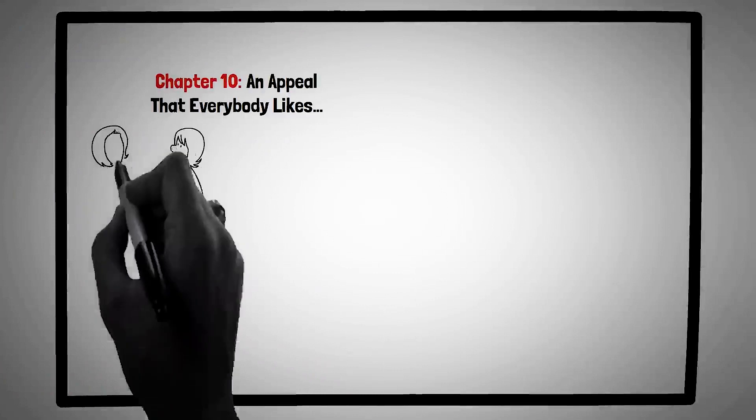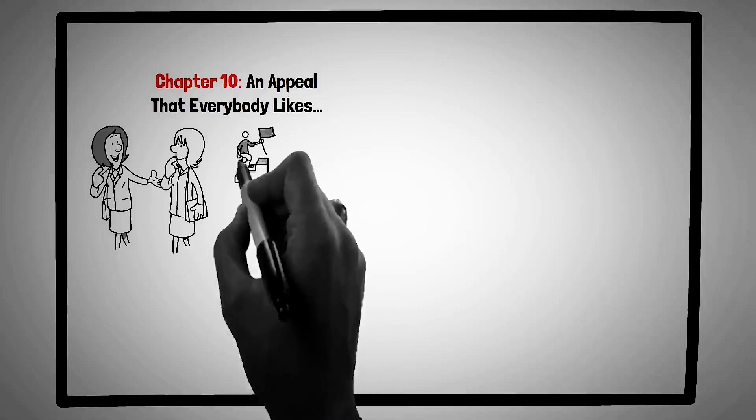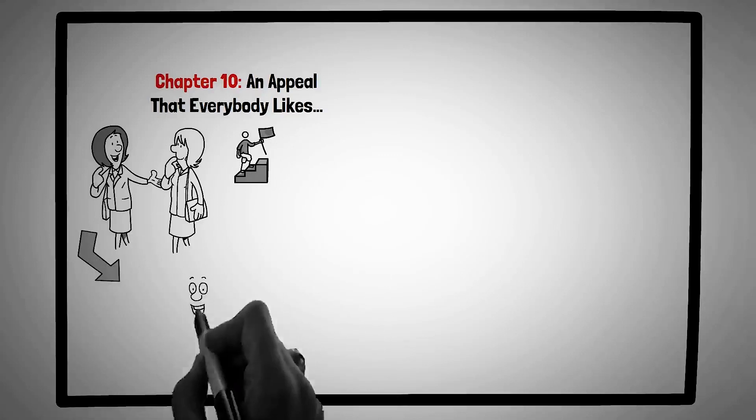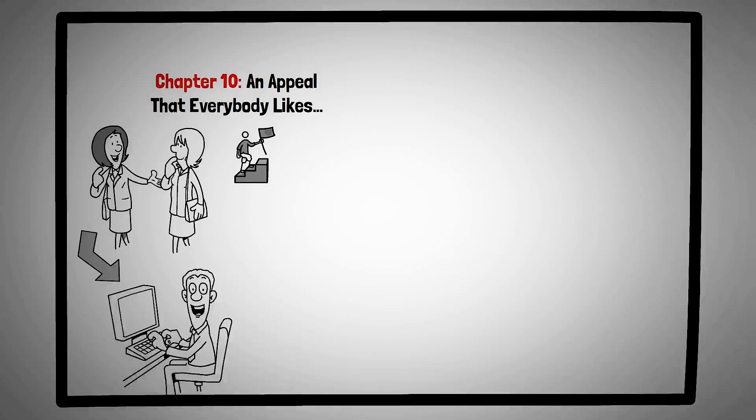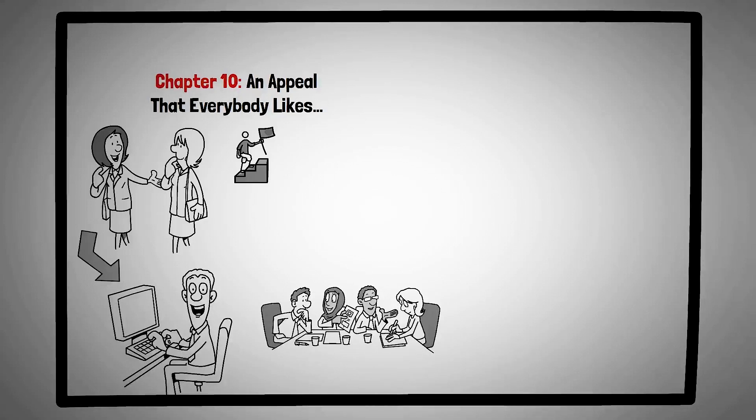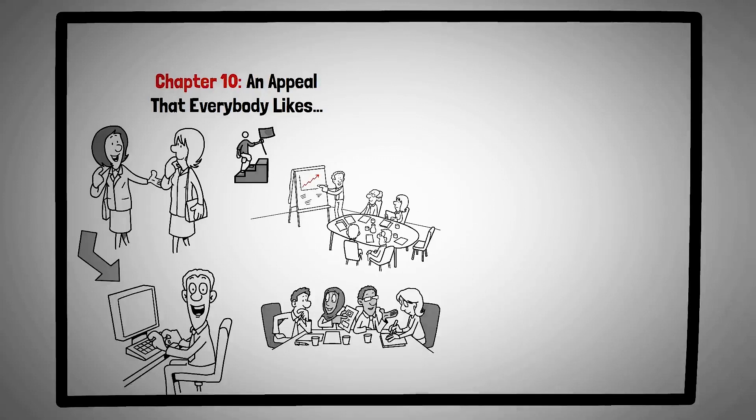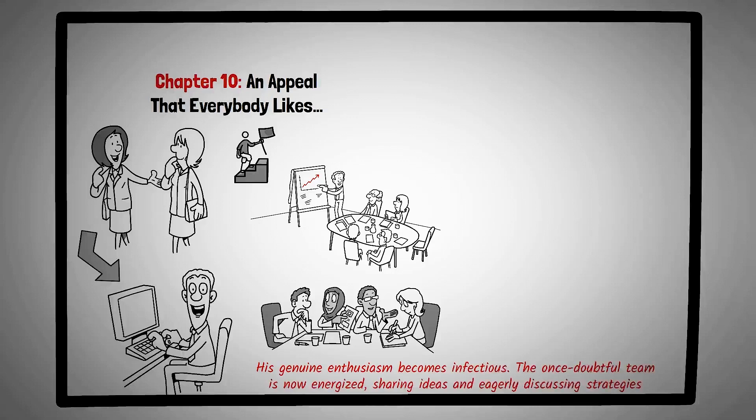Chapter ten, an appeal that everybody likes. Enthusiasm is contagious. When channeled effectively, it can motivate, inspire, and drive people towards shared goals and visions. This chapter delves into the magnetic power of genuine enthusiasm and its role in influencing and rallying others. Consider the story of Ray, a manager at a software company. Tasked with launching a new product, he faces a team that's weary from past projects and skeptical about the new launch's success. Instead of diving straight into logistics and timelines, Ray decides to take a different approach. He organizes a kickoff meeting, showcasing the potential impact of their product on users worldwide. He shares inspiring stories, plays uplifting music, and even brings in a user to share their anticipation for the product. His genuine enthusiasm becomes infectious. The once doubtful team is now energized, sharing ideas, and eagerly discussing strategies. Ray's ability to arouse enthusiasm transforms the project's trajectory, turning apprehension into excitement and commitment.